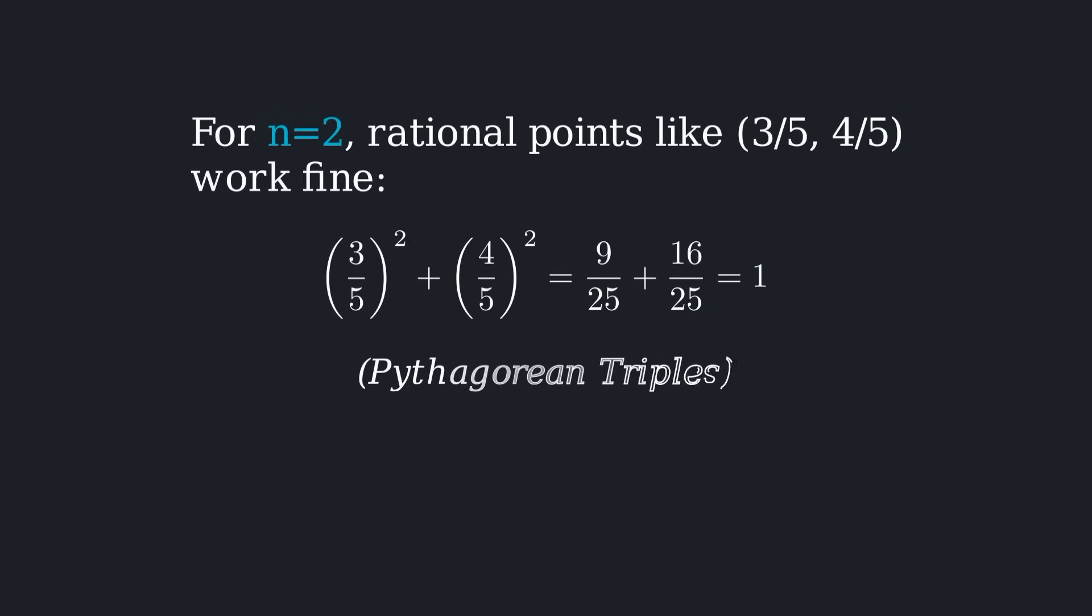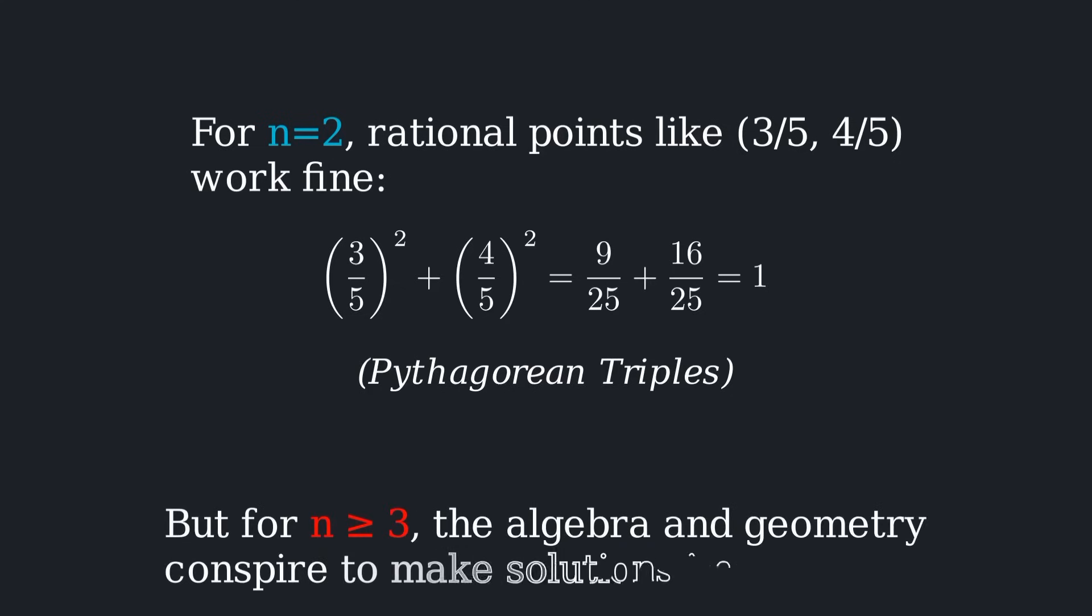For n equals 2, rational points like 3 over 5 and 4 over 5 work fine. These are the Pythagorean triples. But for n greater than or equal to 3, the algebra and geometry conspire to make solutions impossible.